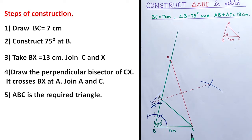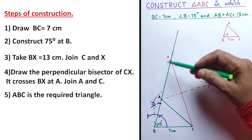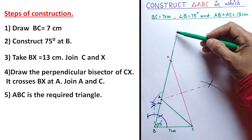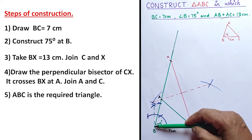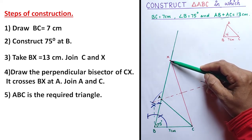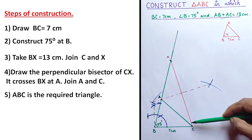Once again I will explain. First, draw the base BC of 7 centimeter. Then at B construct 75 degree, extend that side, and on that side take the sum of the other two sides — AB plus AC equals 13 centimeter — with a ruler. 13 centimeter comes here at X.